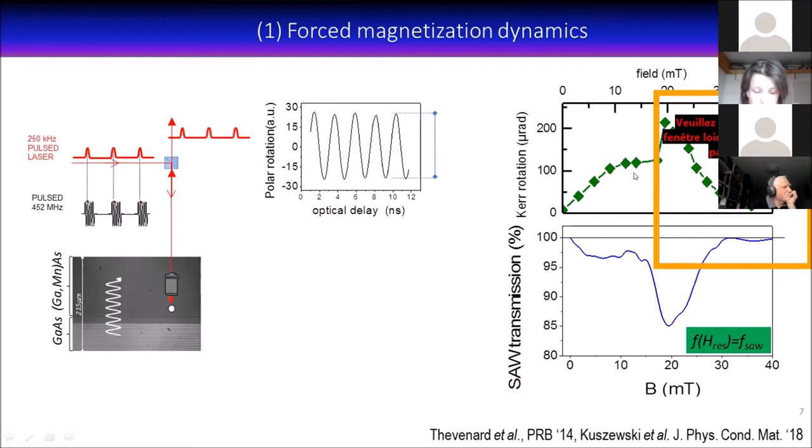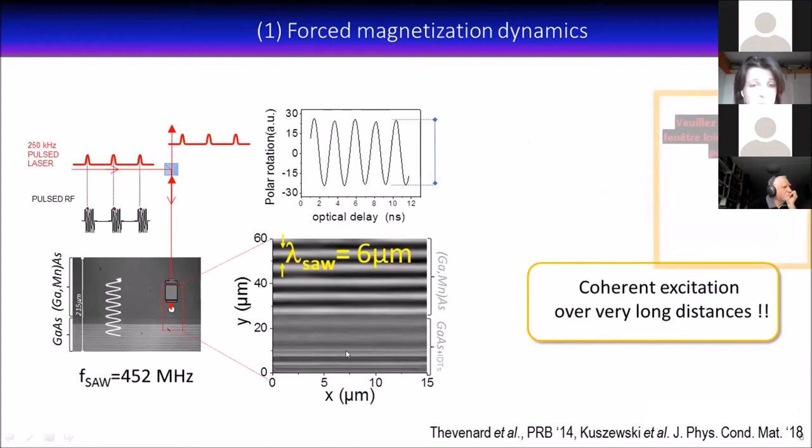This was a nice demonstration of this really coupled magneto-acoustic resonance. We tried to go a bit beyond. Instead of varying the time, we rastered in space at a fixed time delay. Here you have a very nice spatial image of the dynamics where the periodicity you see is the six micron period of the surface acoustic wave. This is a 60 micron image, but I could go much further and show that we have coherent excitation over very long distances because surface acoustic waves are very weakly damped.